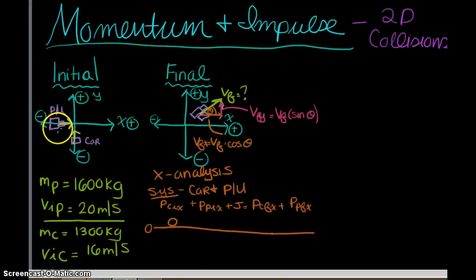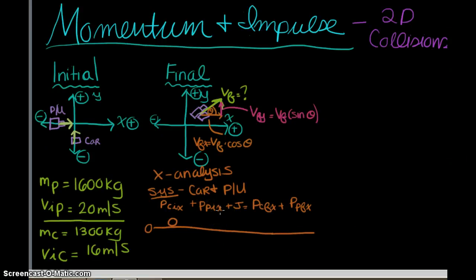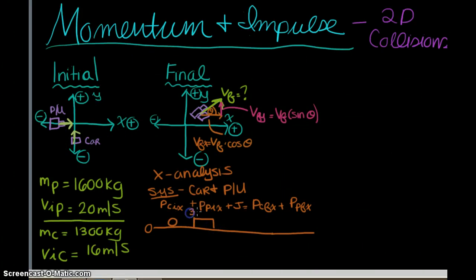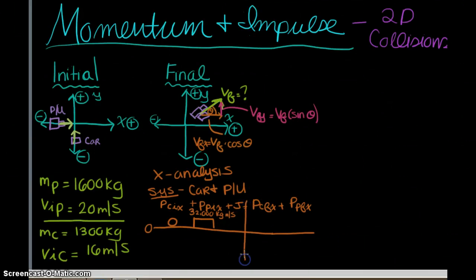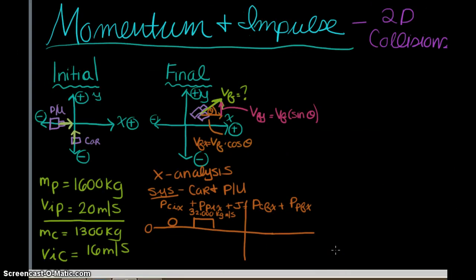The pickup truck is a different story — it has 20 meters per second all in the x-direction. To find its momentum, I take the mass of the pickup truck, 1600 kilograms, and multiply by 20 meters per second, giving 32,000 kg·m/s. Assuming friction is negligible, there's no external impulse on the system in the x-direction.